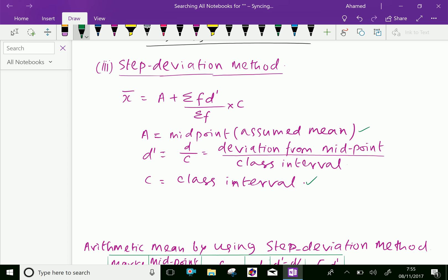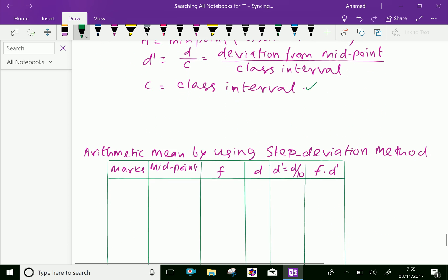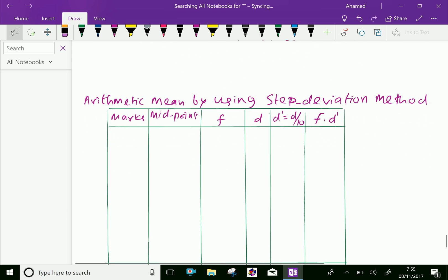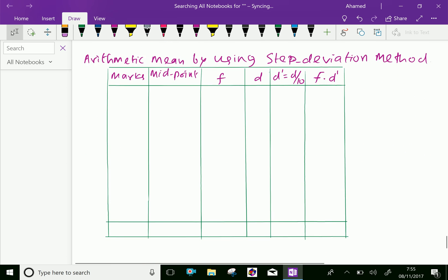Now, let us do the problem previously explained. Find the arithmetic mean using the step deviation method. The marks are given: 0 to 10, 10 to 20, 20 to 30, 30 to 40, 40 to 50, 50 to 60, and 60 to 70.